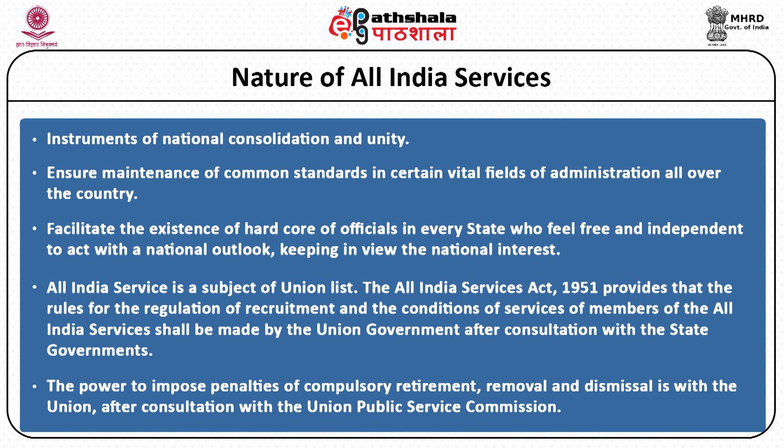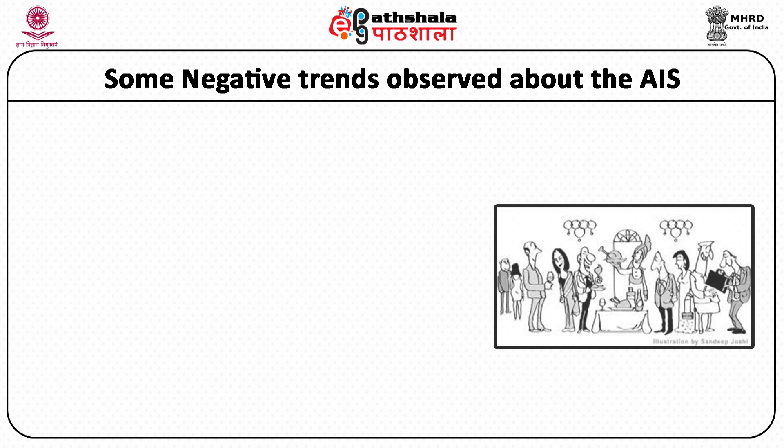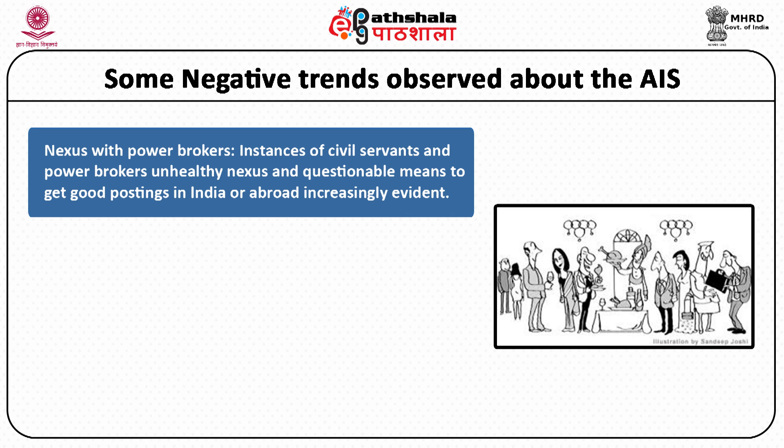Now friends, we have seen that All India Service Officers are very important in the functioning of the administration of the entire country. But of late, certain negative trends have been observed in their functioning. The first such negative trend is the unhealthy nexus between officials of All India Services and politicians. This unhealthy nexus has become a breeding ground for corruption in India, and civil servants entertain unhealthy and unrequired demands of the political class in trying to get plum postings. This has worked against transparent, corruption-free and rational administration in the country.